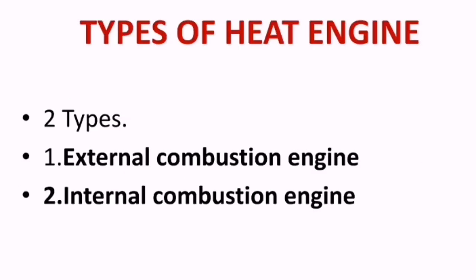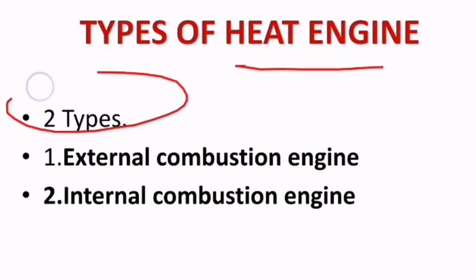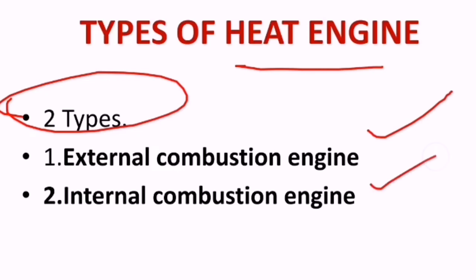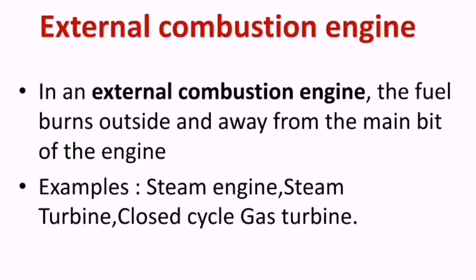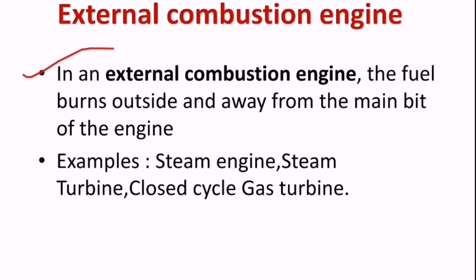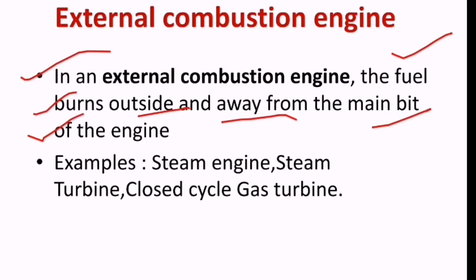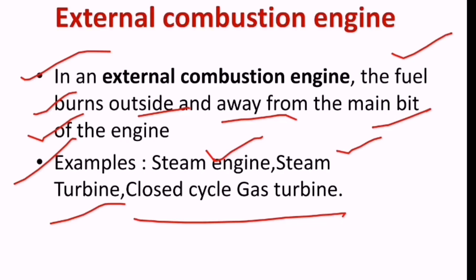What are the types of heat engines? There are two types. One is internal combustion engine, and another is external combustion engine. In an external combustion engine, the fuel burns outside and away from the main body of the engine. Examples are steam engine, steam turbine, and closed cycle gas turbine.